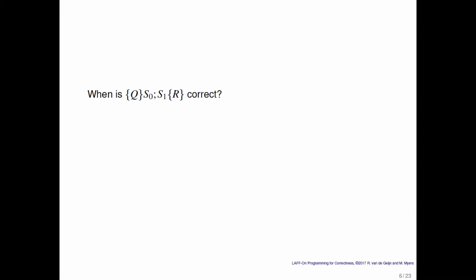So the question we then ask ourselves is, when is the Hoare triple Q, command S0 followed by S1, R, correct? Well, it's when Q implies the weakest precondition of the composed command S0, S1, leaving you in a state where R is true. And that means we have to define the weakest precondition of S0 composed with S1.